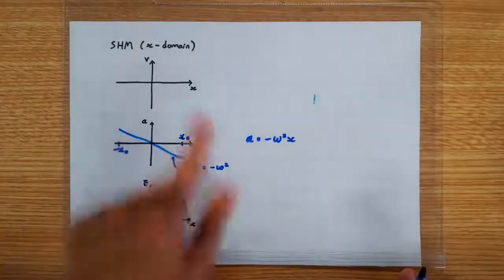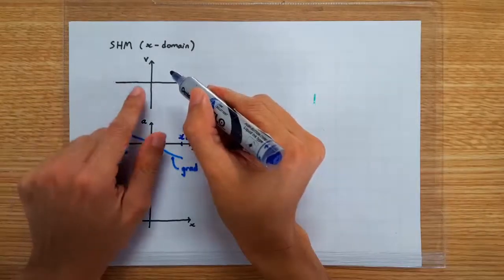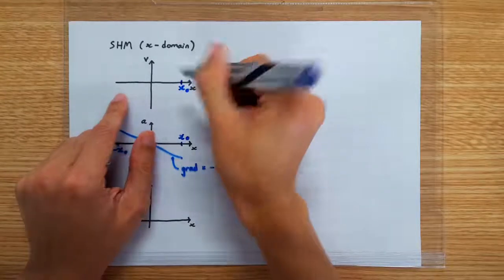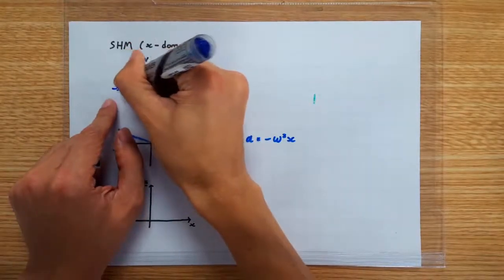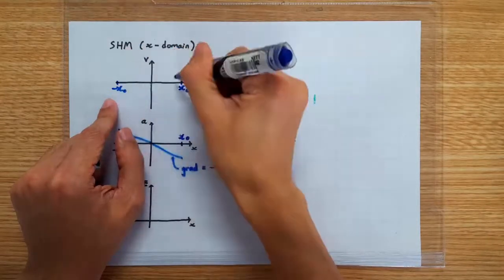Let's move on to the VX graph. For an SHM, the oscillation comes to a rest at the extreme positions. So we know that these are two points on the VX graph.